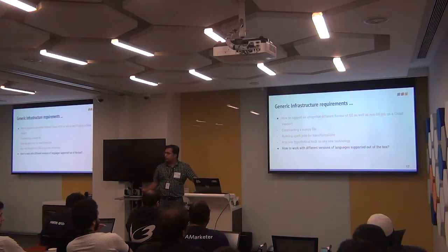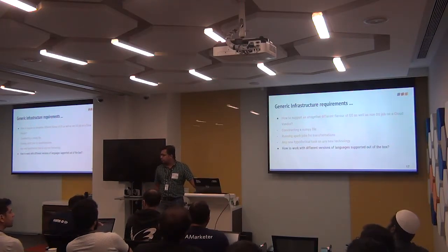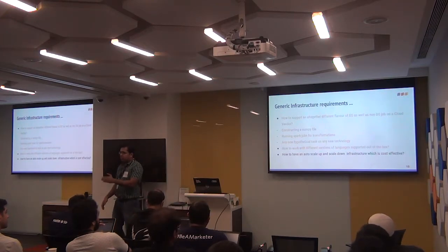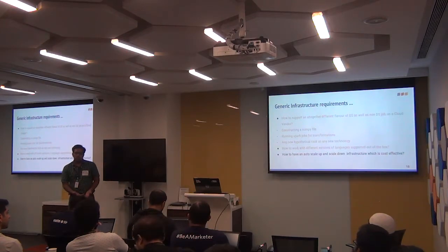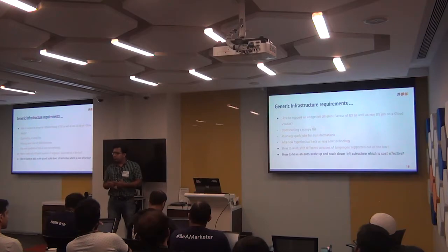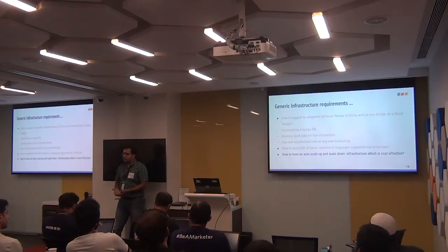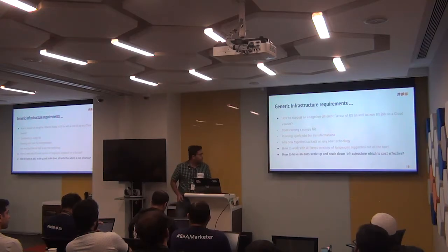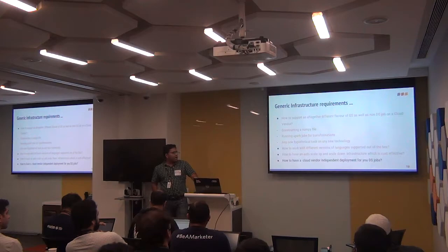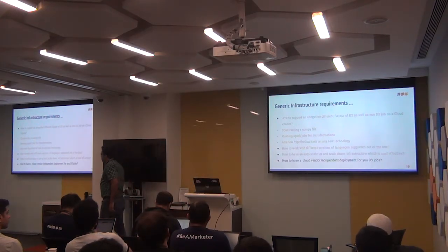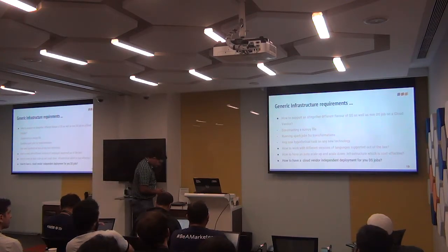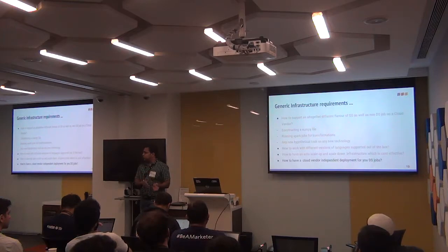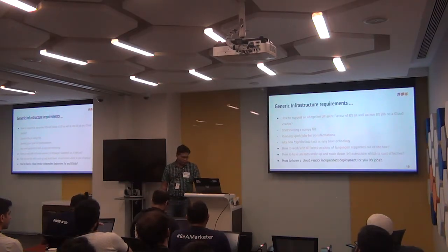Another requirement is how to work with different versions of languages - Google supports Python 2.7 by default but you want to use Python 3.7 or 3.8. Another is how to have auto scale-up and auto scale-down, because if your cluster scales from 2 to 100 nodes, it should come back down to 2 if the rest of the 98 are not required, otherwise you are wasting a lot of resources - and this should happen automatically. And finally, how to have a cloud vendor-independent deployment so you can pick it up and move to any other vendor with minimal changes.